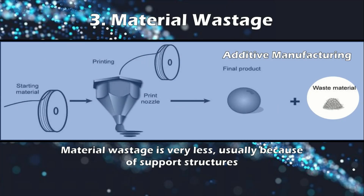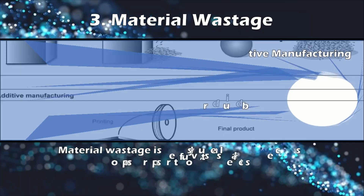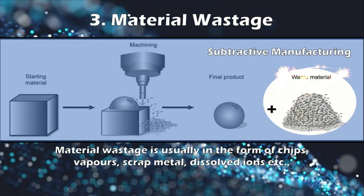Number three: material wastage. In the additive manufacturing process, wastage of material is very less, and usually the wastage is in the form of support material. There are some 3D printing techniques where we don't even need support materials. But in subtractive manufacturing, we remove material from the workpiece, so this process produces lots of wastage, usually in the form of chips, vapors, scrap metal, dissolved ions, etc.